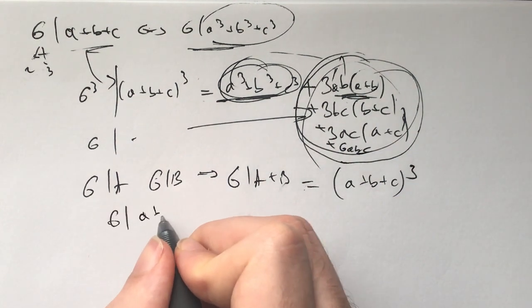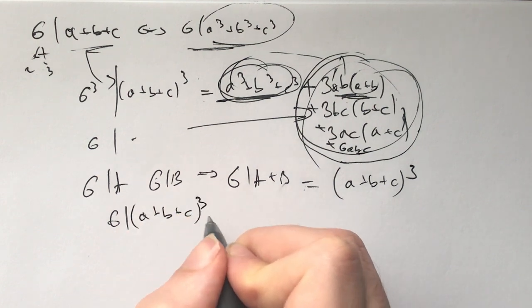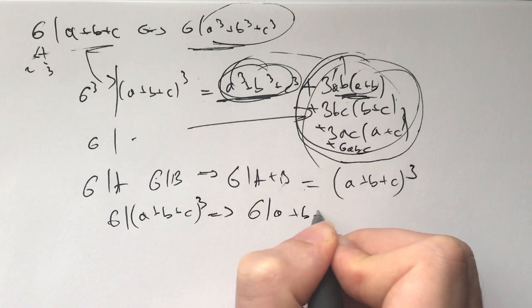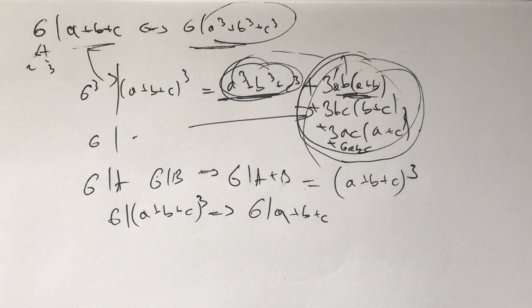And now from 6 divides a plus b plus c cubed. Here you can infer that this implies 6 divides a plus b plus c. And this is one way of proving this statement.